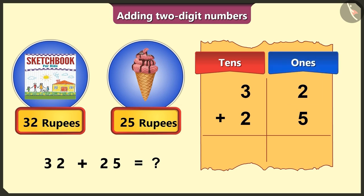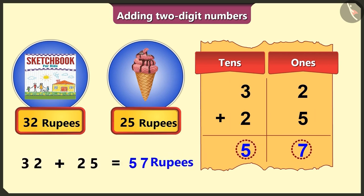Now, in the ones box, two and five will add up to form seven. In the tens box, three and two will add up to form five. So, auntie, you have to give me a total of fifty-seven rupees.